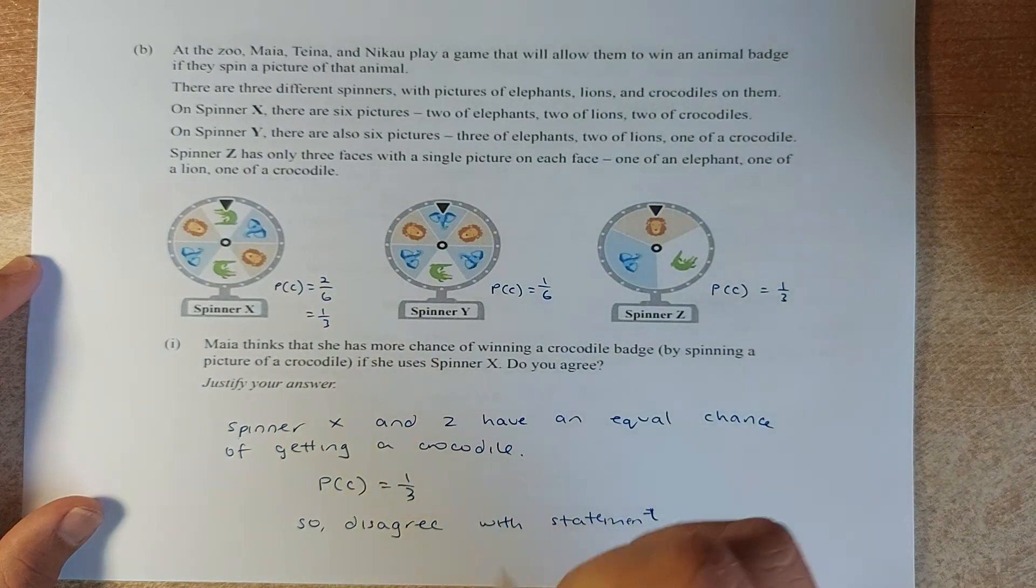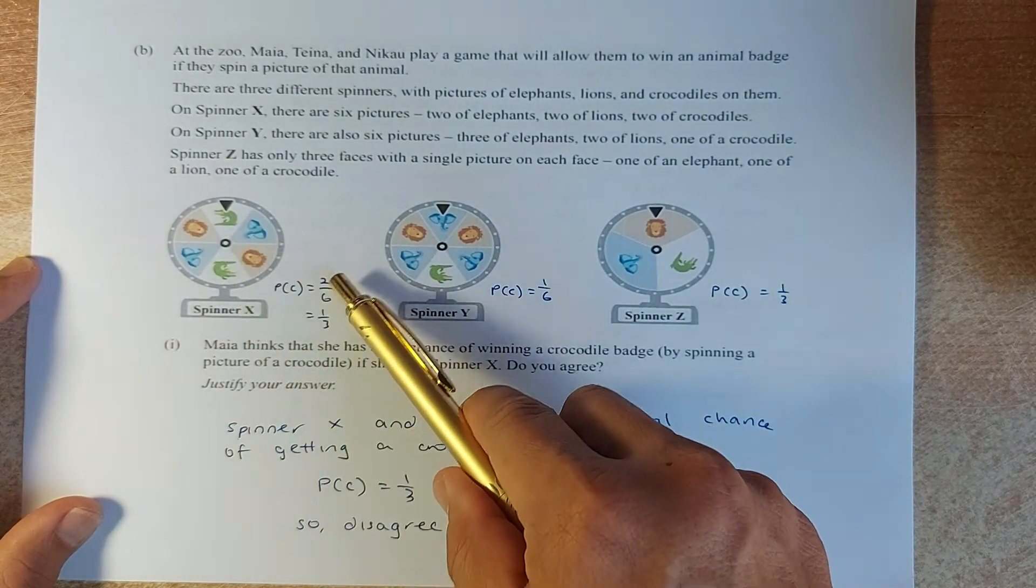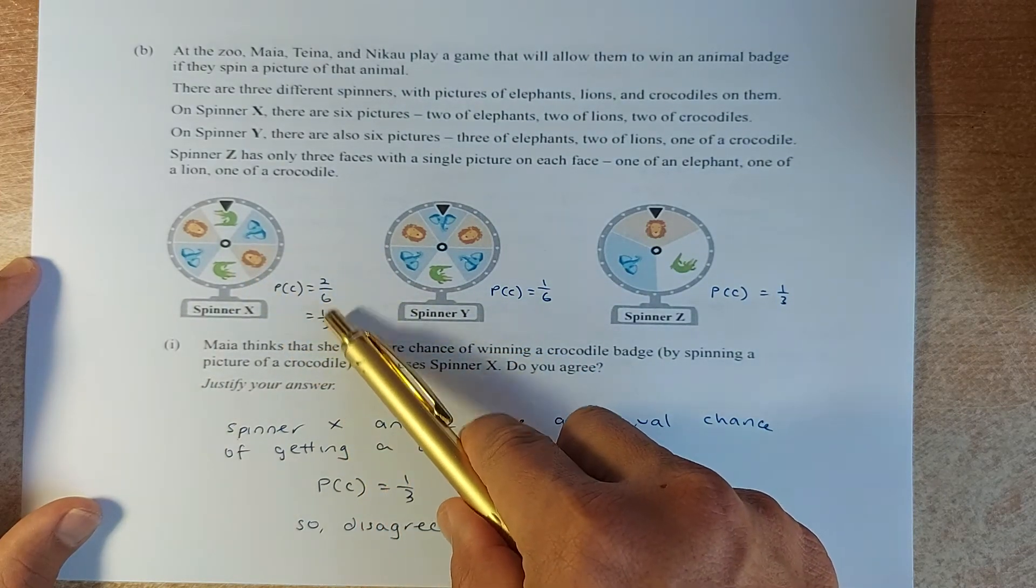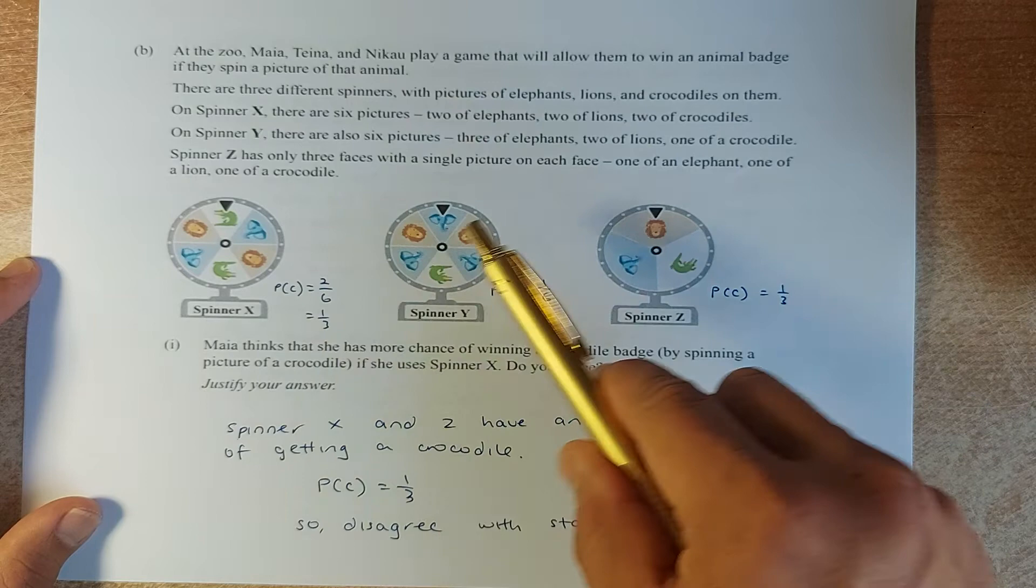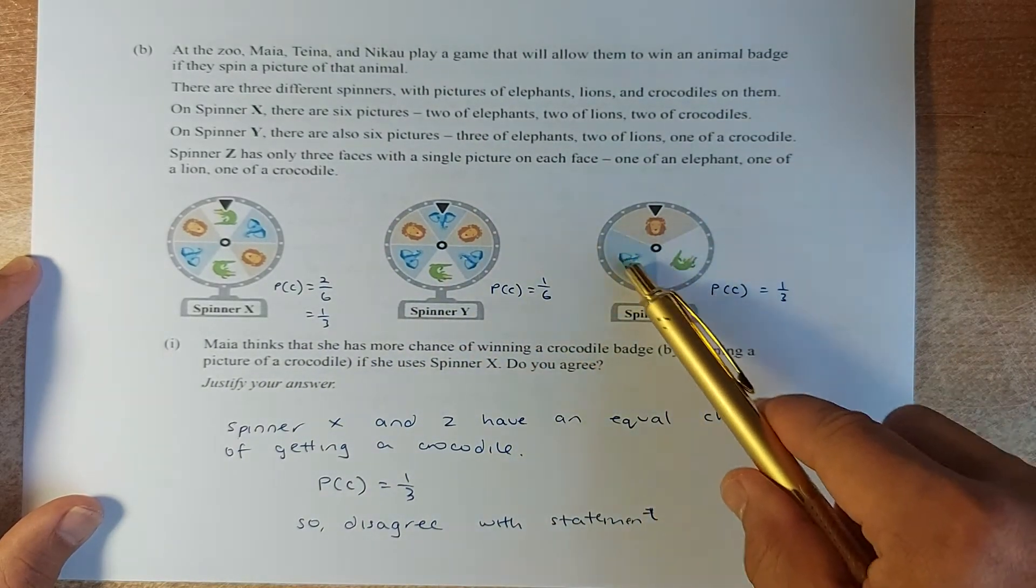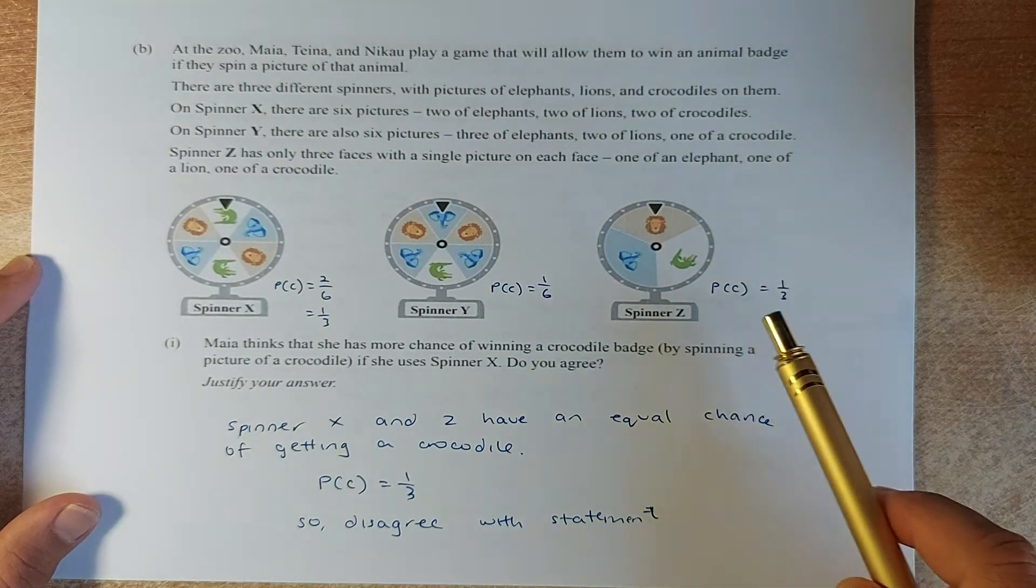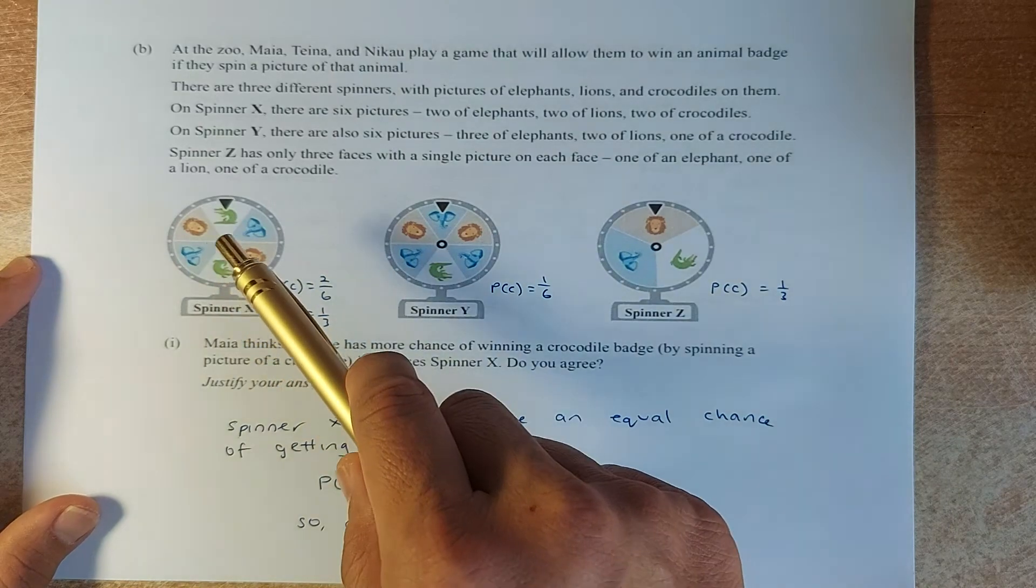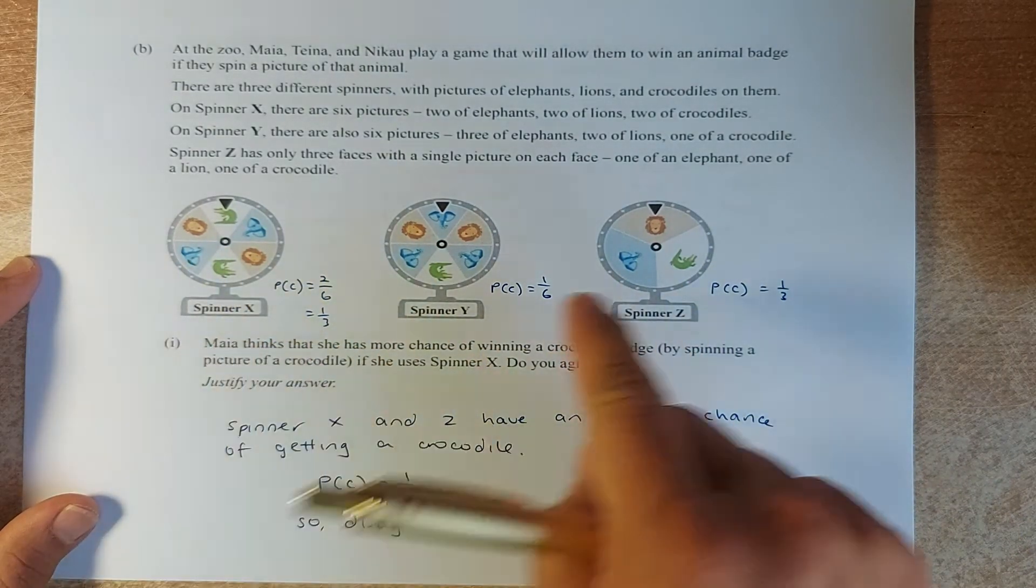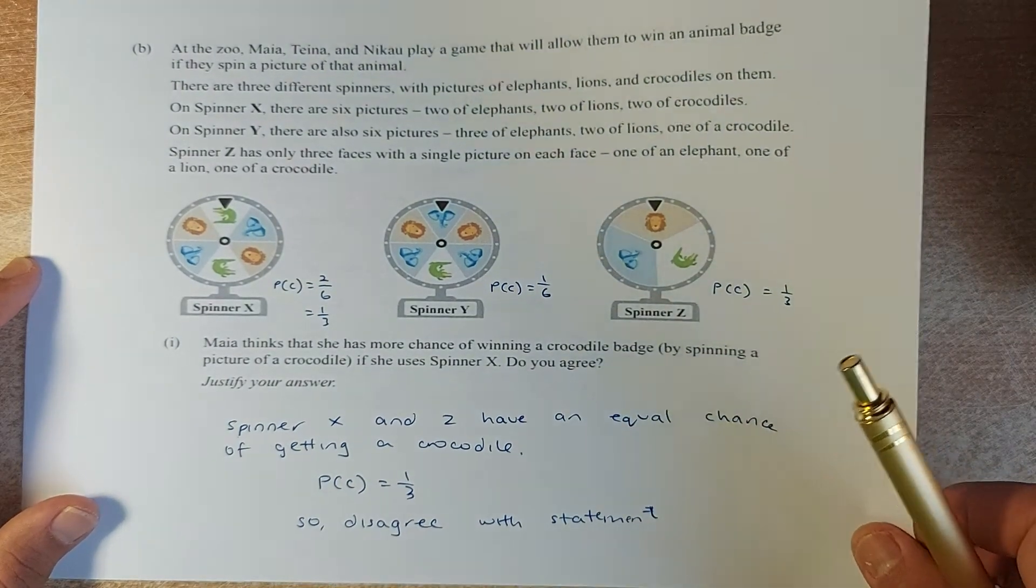Maya thinks that he has more chance of winning a crocodile badge by spinning if he uses spinner X. So we first calculate the probability of getting a crocodile. Crocodile is the green one. One, two. So two out of six. The chances of a crocodile in spinner X is one over three. Two six is equivalent to one third. Over here, crocodile is one out of six. So one out of six. And over here, crocodile, one out of three. So of course, Maya is wrong because the chances of getting a crocodile is the same for spinner X and Z. Not only spinner X because X and Z have the same probability which is one third. So I have to disagree with that statement.